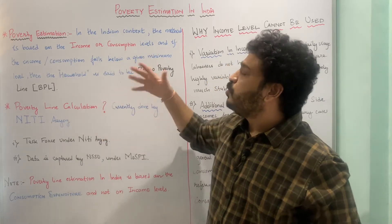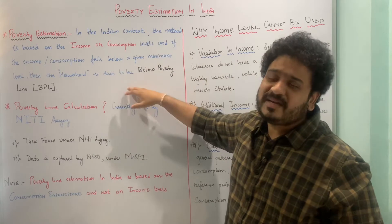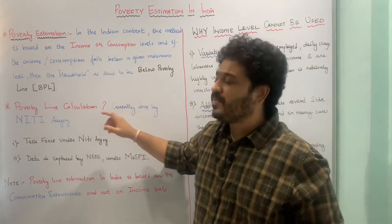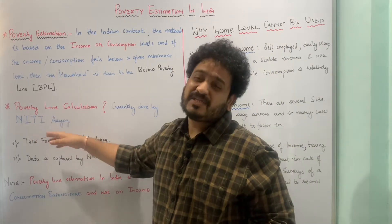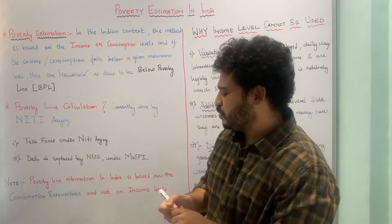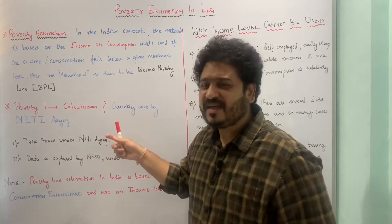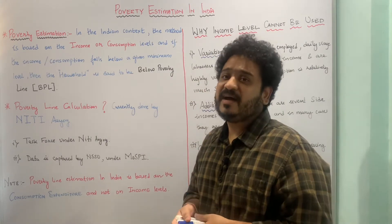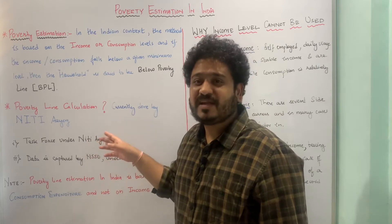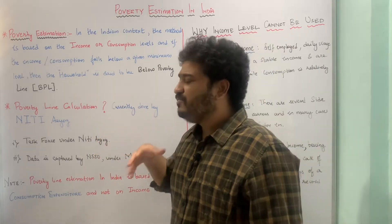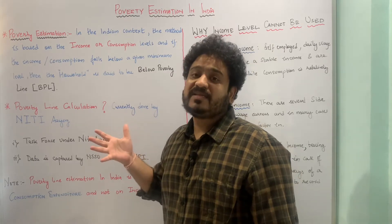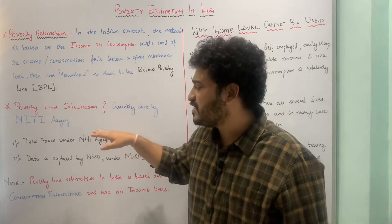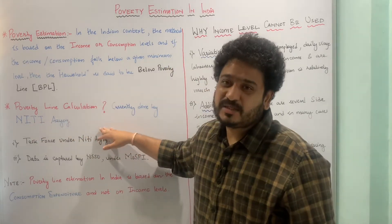Poverty is estimated in the Indian context by NITI Aayog, which stands for National Institute for Transforming India. It was set up in 2014 and has taken over from one of the very important think tanks in India called the Planning Commission, which was established in the 1950s. The Planning Commission developed the five year plans, which are no longer in existence, and it is now NITI Aayog which is formulating policies with respect to the Indian economy.